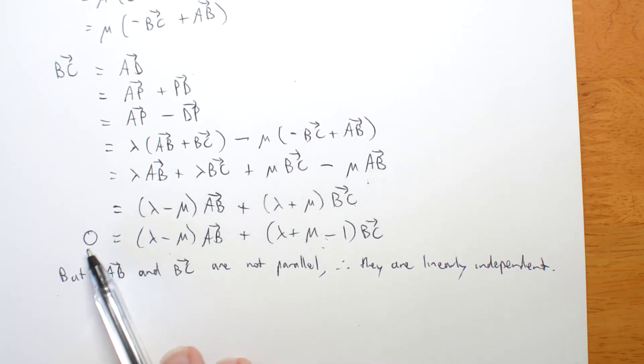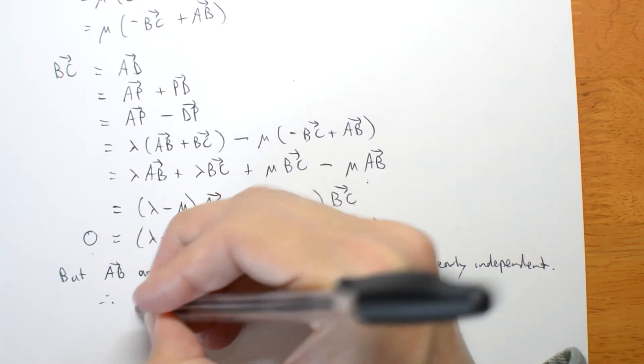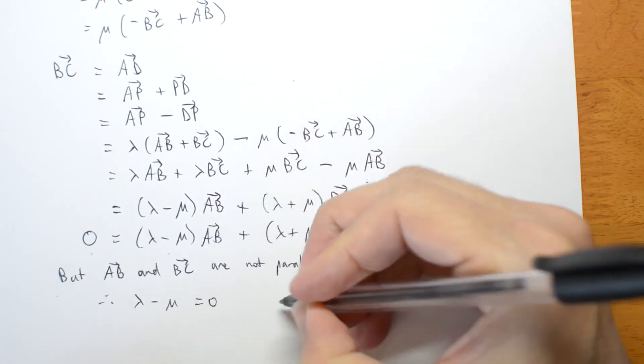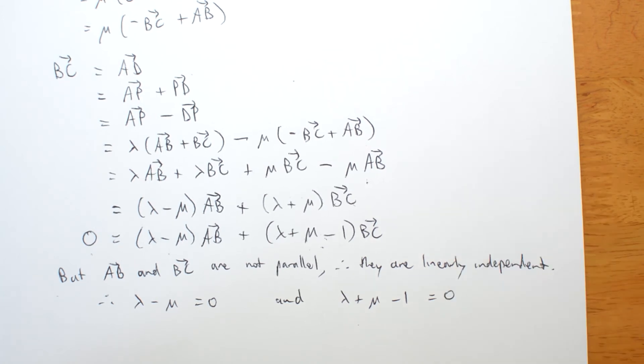And if the linear combination equal to zero, those two coefficients must both be zero. So lambda minus mu must be zero. And lambda plus mu minus one must also be zero.